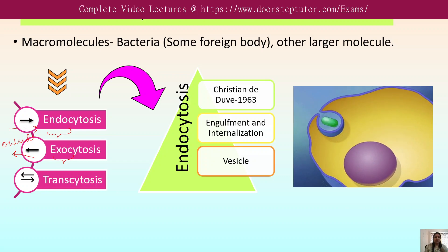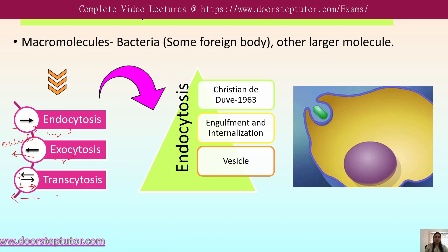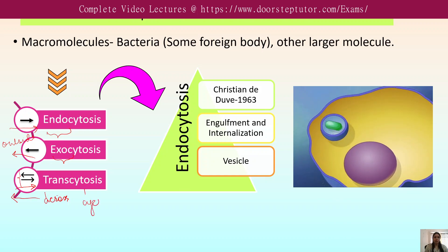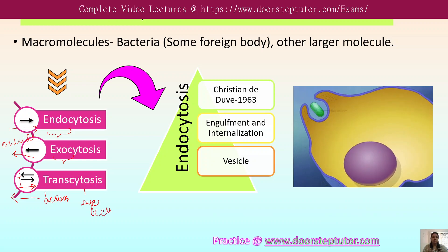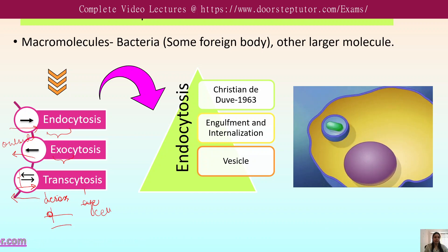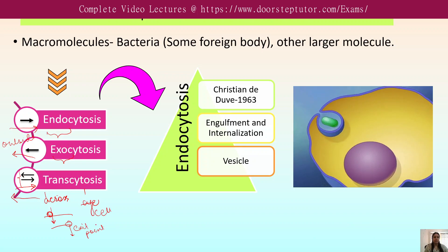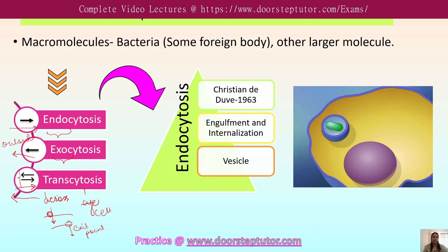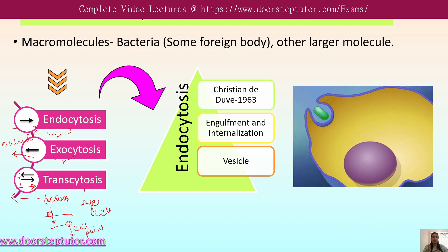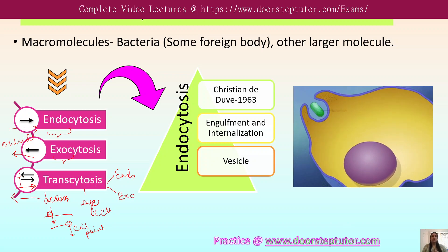Transcytosis involves two different arrows — one going inward and one going outward. 'Trans' means across, so transcytosis is the transport of macromolecules across the cell: molecules enter from one region and exit through another end. Therefore, transcytosis involves both endocytosis and exocytosis.